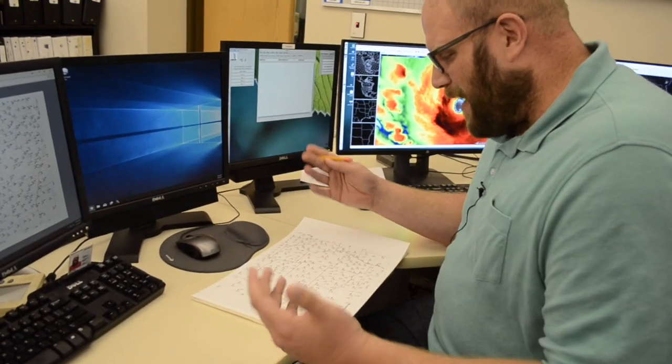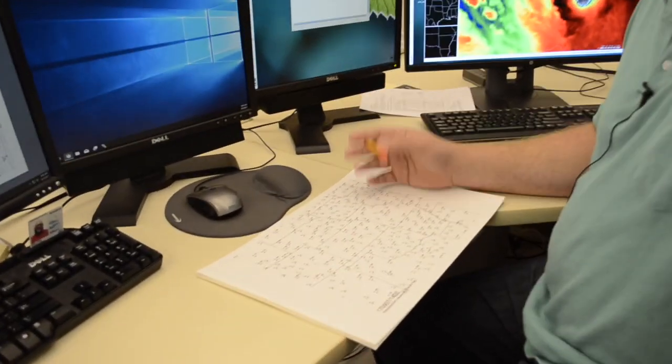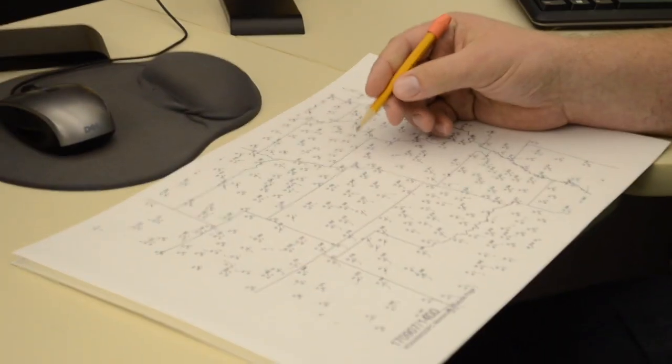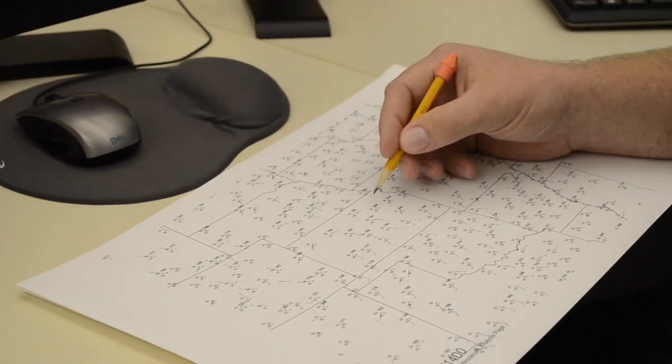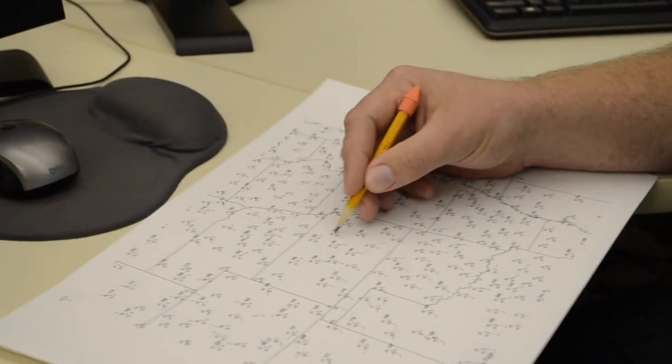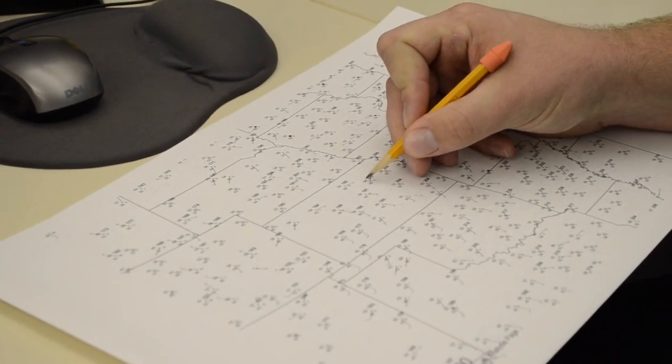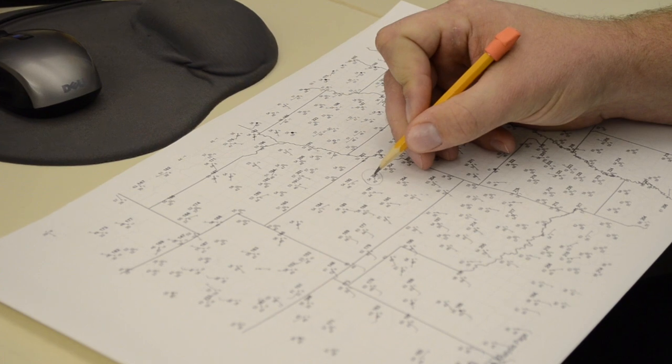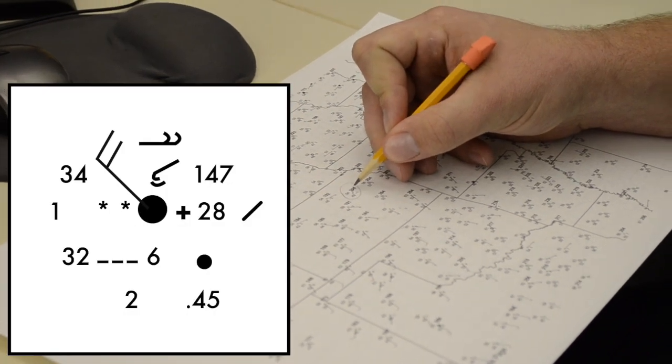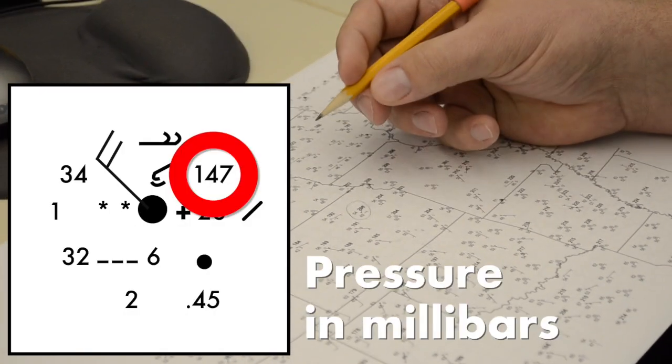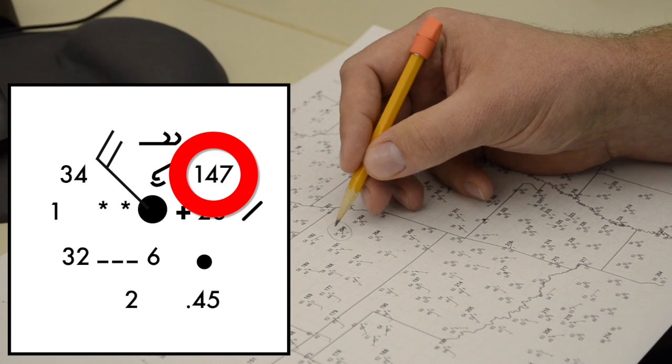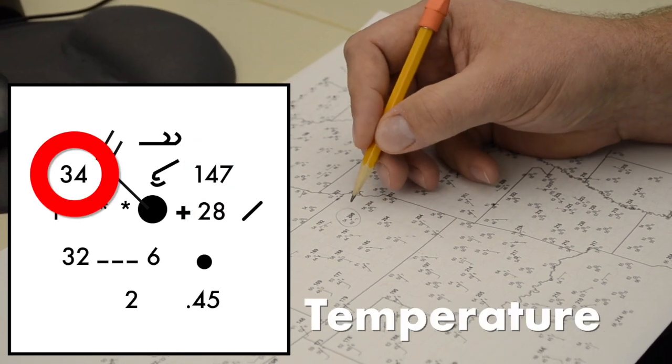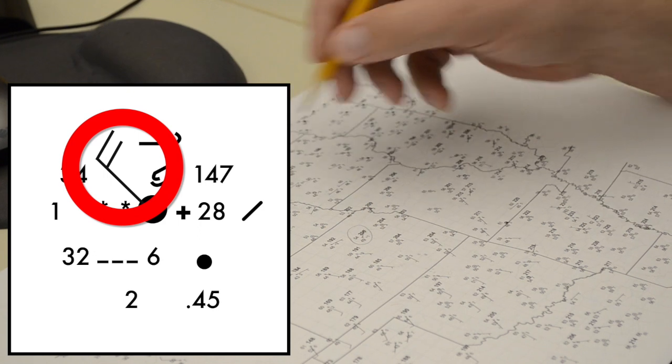So why don't we go through how you would do this? It's kind of a benign weather day across the central part of the US, but essentially it's kind of an art form. Any one of these station models here, you've got, let's take this one for example. The black bold output on the upper right is your pressure in millibars.